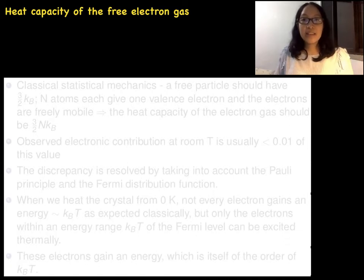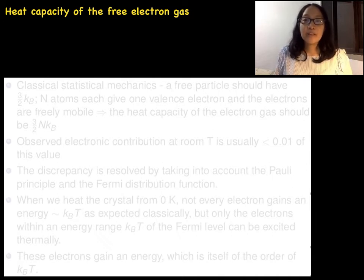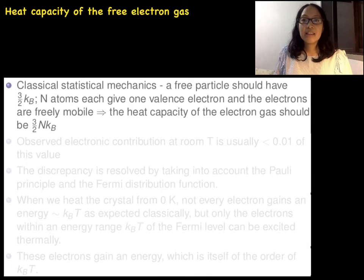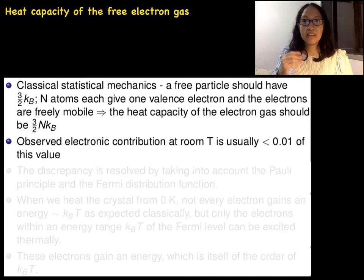Today's topic is heat capacity of the free electron gas. Related to the topic, there's a prediction by classical mechanics, classical statistical mechanics. The prediction is that a free particle should have a heat capacity of 3/2 times Boltzmann constant, or 3/2 kB.